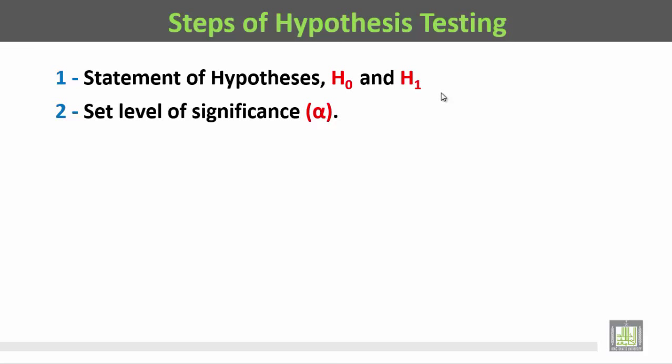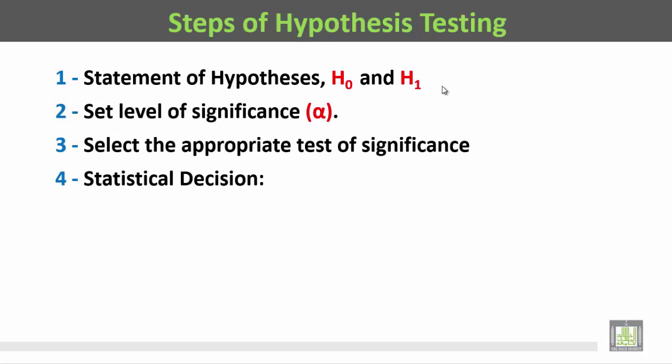Significance, Alpha. نضع مستوى المعنوية Alpha. Number 3: to select the appropriate test of significance. خطوة ثالثة هي اختيار اختبار المعنوية المناسب. Step 4: Statistical decision. وضع القرار الاحصائي.